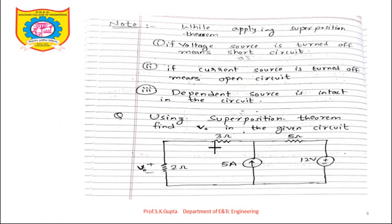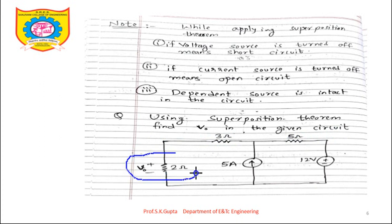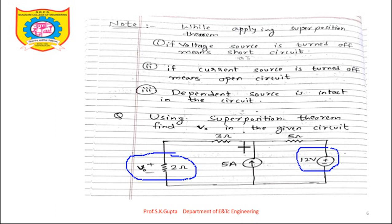Let's consider the first example: using the superposition theorem, find V0 in the given circuit. V0 is the voltage across the 2Ω resistor — we have to calculate it using the superposition theorem. There are 2 sources, so we consider 2 cases. Case 1: the 12V source is present and the 5A source is turned off, meaning the current source is replaced by an open circuit — we remove that branch.